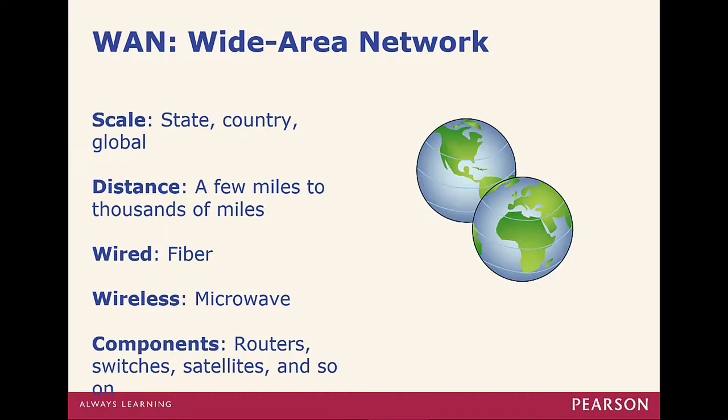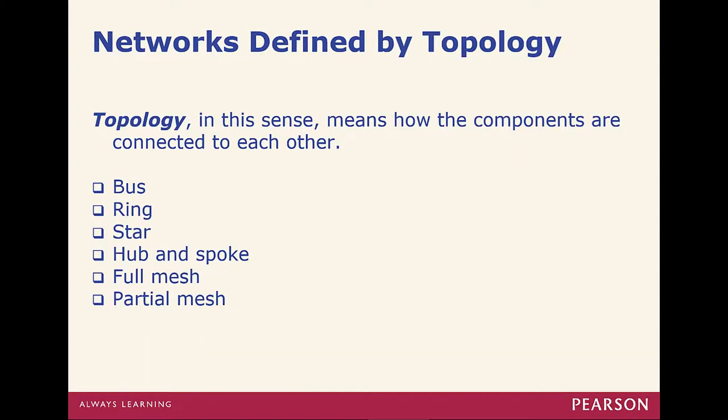WAN. A wide area network is maybe a state, country, global. It could be from small distances to large distances. Normally we're talking fiber. Doesn't have to be. We could still be talking about copper, but normally it's going to be fiber. Coax, in terms of maybe between end users and their ISPs, maybe. Wireless could be WiMAX and microwave. Components are going to be routers and high, high-level switches. Not the same type of switch you'd be seeing in a LAN, but larger switches.